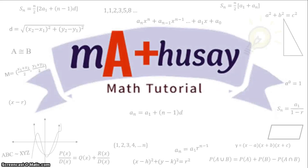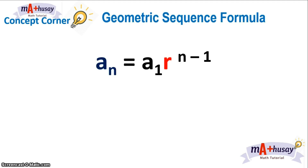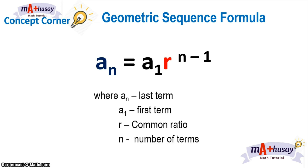Good day! Welcome back to another Math Husay Math Learn Tutorial. In this episode, you will learn how to find the number of terms in a geometric sequence. We know that the geometric sequence formula is a sub n equals a sub 1 times r raised to n minus 1. This formula will be used in order to find the number of terms in a given sequence.